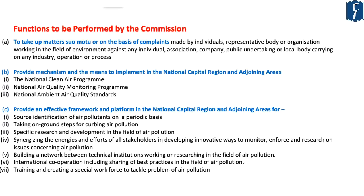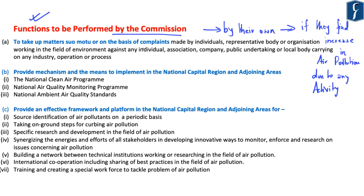Now let us understand how the commission will implement these powers through its functions. First, the commission can take up matters suo motu if it finds that air pollution is increasing because of a particular activity. It can also act on complaints made by any individual, representative body, or organization working in the field of environment, against any individual, association, company, public undertaking, or local body carrying on any industrial activity or process which impacts air quality.